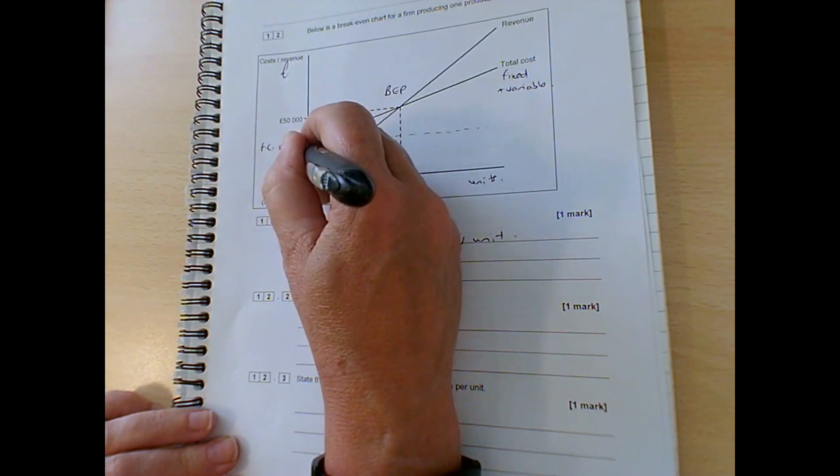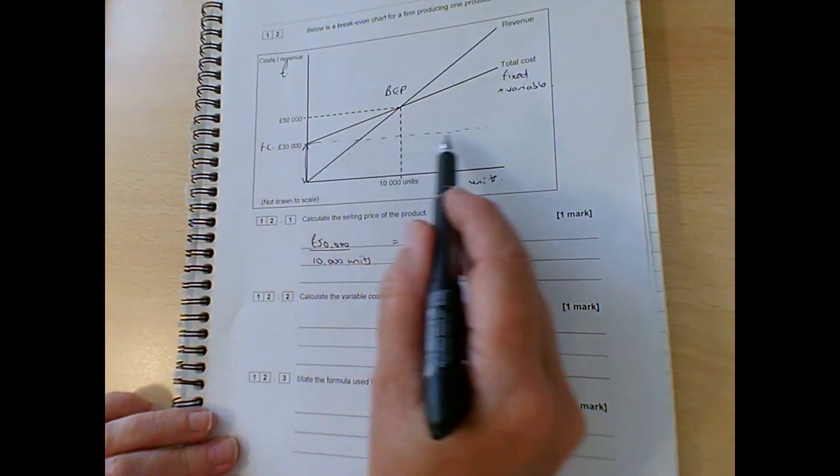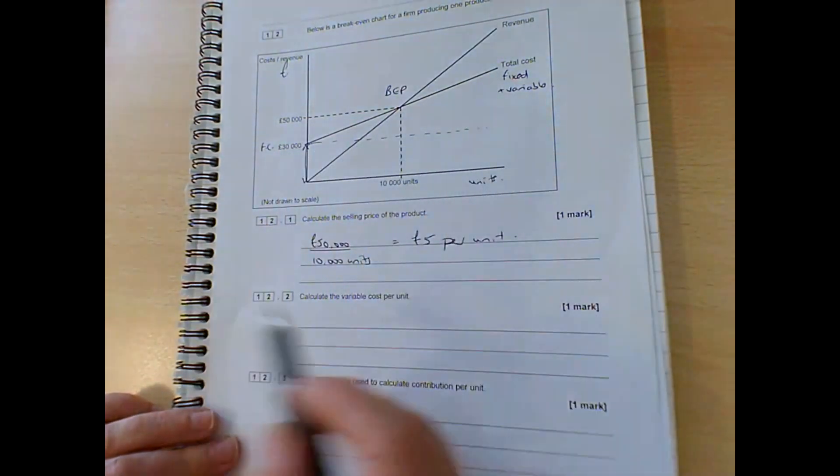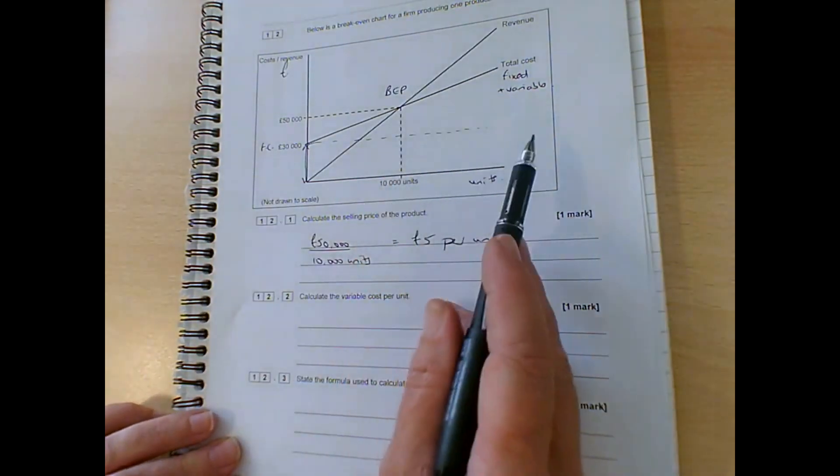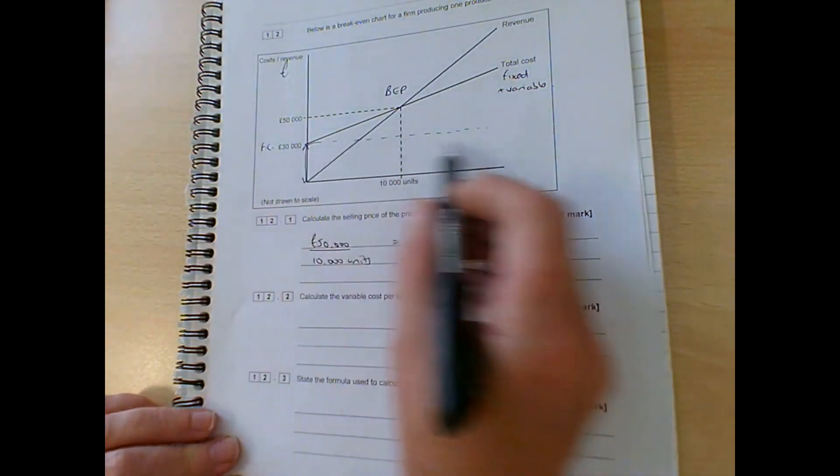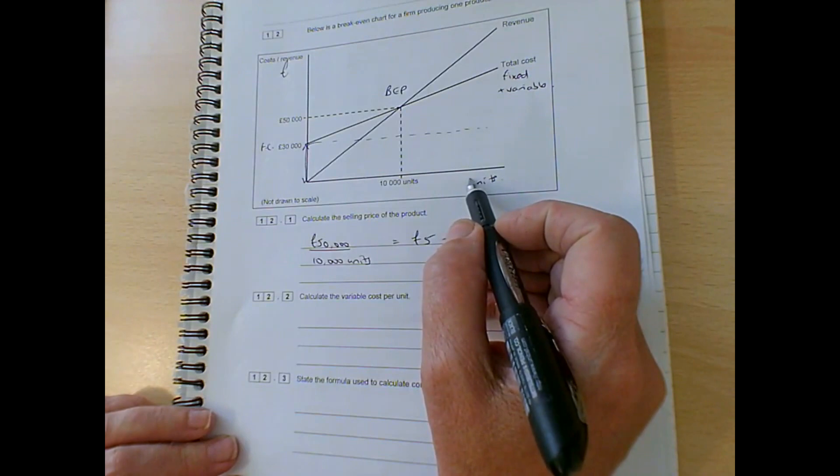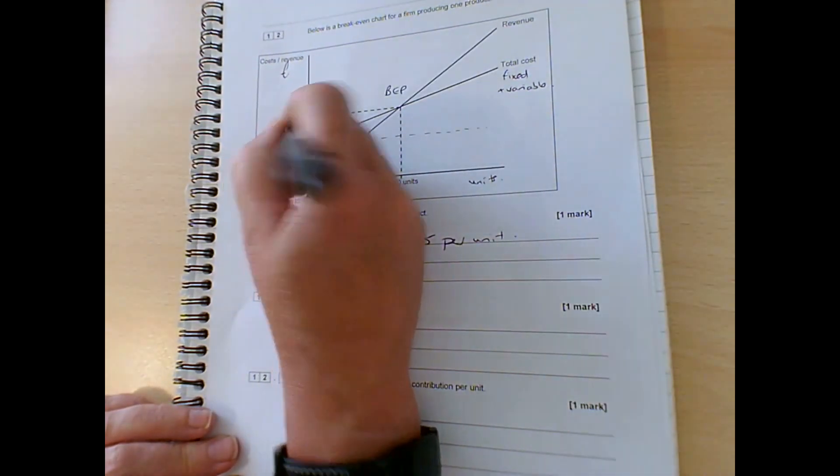This part here doesn't change. So it doesn't change whether the output is zero, or whether it's 10,000 units, whether it's 20,000 units. So unless it steps up at one particular point, it will stay the same regardless of the level of output.